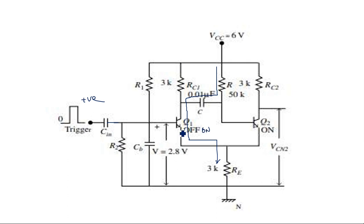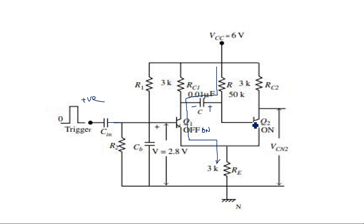During this period, the capacitor charges. This is the charging path. The capacitor charges up to V-gamma, because after reaching V-gamma, the second transistor Q2 comes into the ON state again.